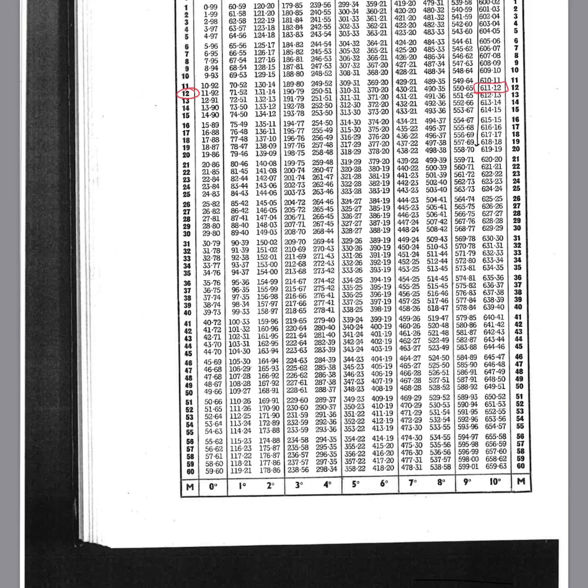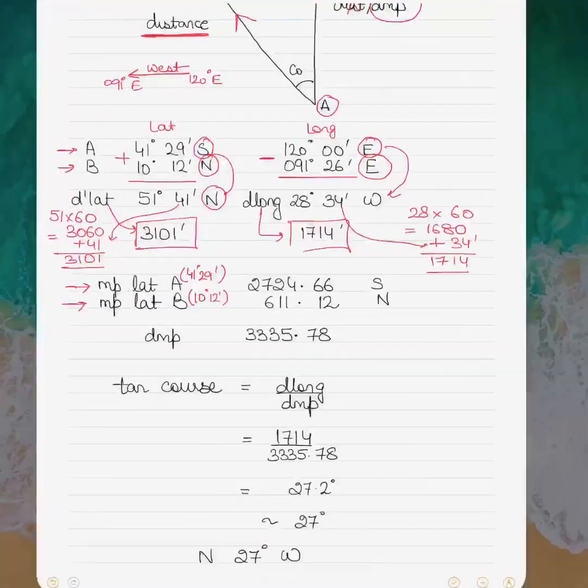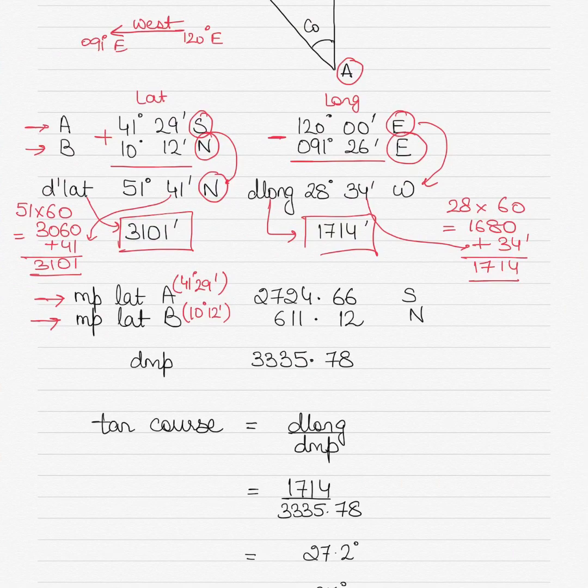When there is an interpolation involved, I'll show you those in a separate video as well. So once you got these values, just put those values here. These are the values we got: 2724.66 and 611.12. And because one is south, the other is north,